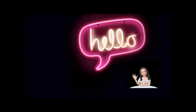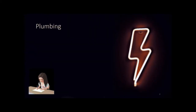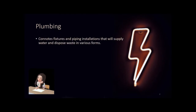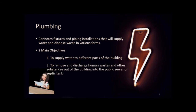Hello, I will be your first reporter for the topic: Sanitary Drainage System. Let us start with plumbing. Plumbing connotes fixtures and piping installations that will supply water and dispose waste in various forms. It has two main objectives: to supply water to different parts of the building, and to remove and discharge human waste and other substances out of the building into the public sewer or septic tank.